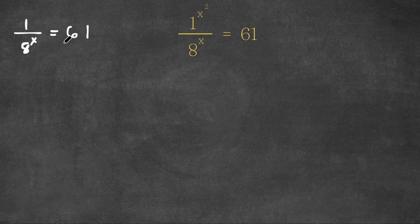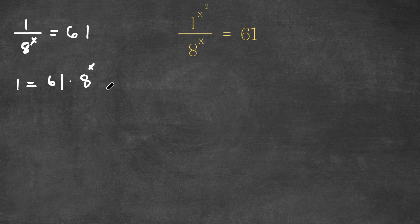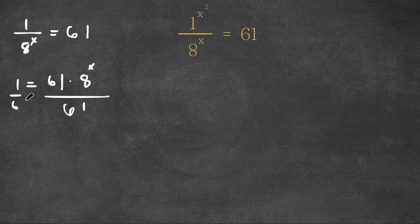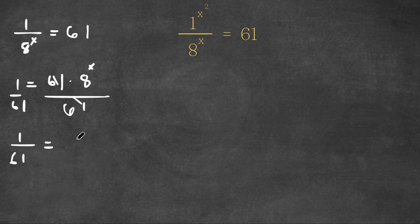Now if I multiply both sides by 8 to the power of x, I get 1 is equal to 61 times 8 to the power of x. Now if I divide both sides by 61, I get 1 over 61 is equal to 8 to the power of x.